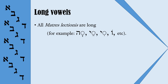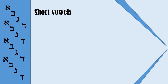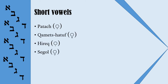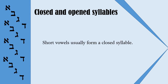All Matres lectionis are long. Holam, Kamets and Tsere are also long. What about the short vowels? Patah, Kamets Hatuf, Chirek, Segol and Kibbutz are short. Why do we need to know which vowels are long and which are short? Because short vowels usually form a closed syllable, and long vowels usually form a long syllable.